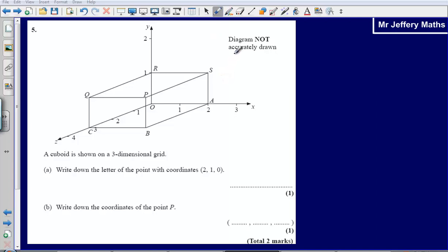This is question 5 from the 2008 non-calculator paper. Here we are given a cuboid shown on a three-dimensional grid. Write down the letter of the point with coordinates 2, 1, 0.